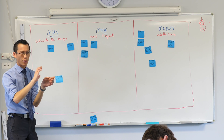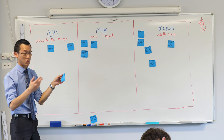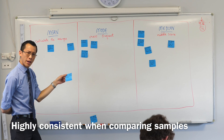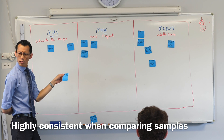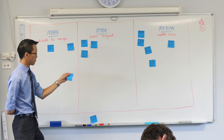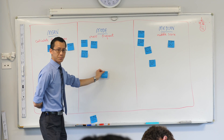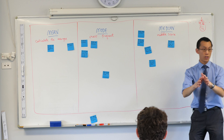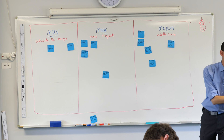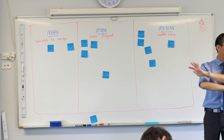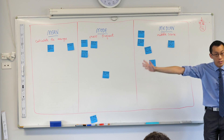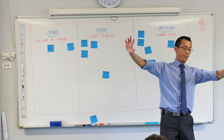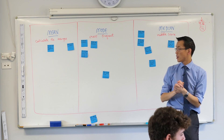This one requires us to remember some language we haven't talked about this year yet — it's only day two. Highly consistent when comparing samples. Can someone remind me what a sample is? It's when you take a group, not the whole thing. The opposite of a sample is a census — a census means everyone is included. A sample is when you just say, well, let's have a look at this class, not the whole school.